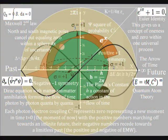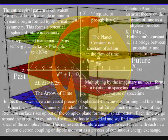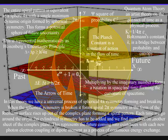When the spherical symmetry is broken, it forms spiral symmetry in the form of the Riemann surface rising up out of the complex plane, forming a spiral pattern.